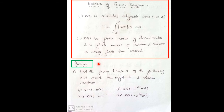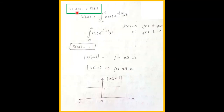Now we are going to solve some problems. First problem: find the Fourier transform of the following and sketch the magnitude and phase spectrum. The subdivisions are: (1) x(t) = δ(t), (2) x(t) = e^(−at)u(t), (3) x(t) = e^(−|t|), and (4) x(t) = e^(2t)u(t).